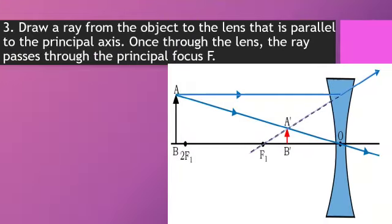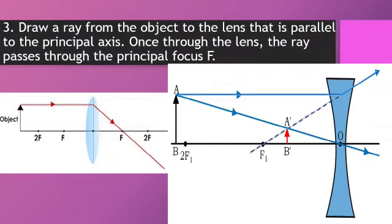Third, draw a ray from the object to the lens that is parallel to the principal axis. Once through the lens, the ray passes through the principal focus. The diagram is a concave lens. This is a convex lens following the same step.